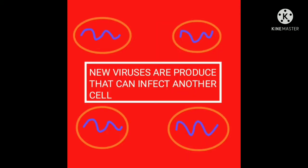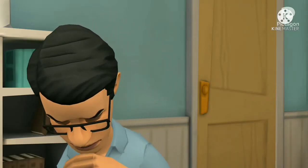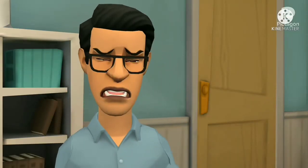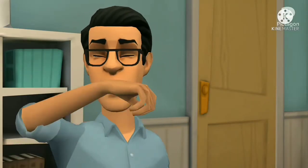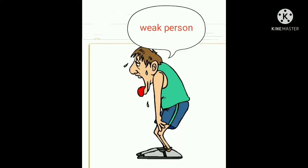This viral RNA forms new viruses, and then these new viruses affect the other macrophage cells. Gradually, the number of macrophages in the blood is decreased, resulting in a decrease of immunity.